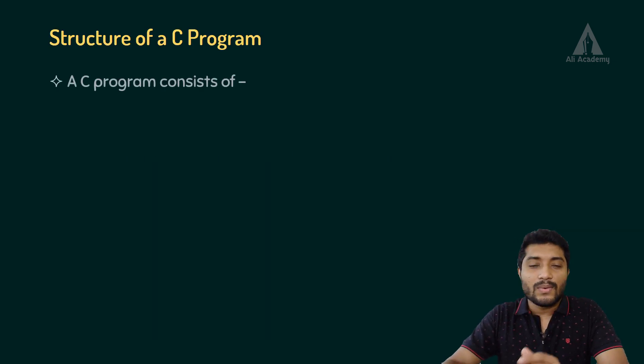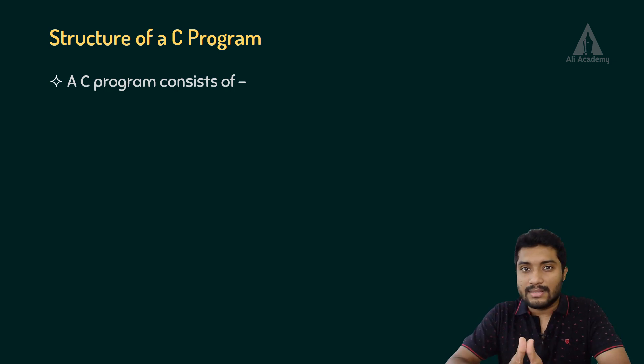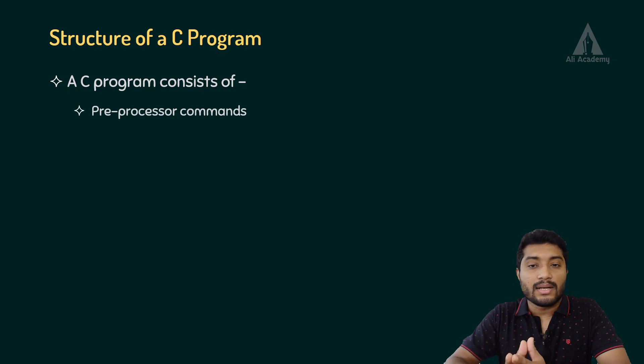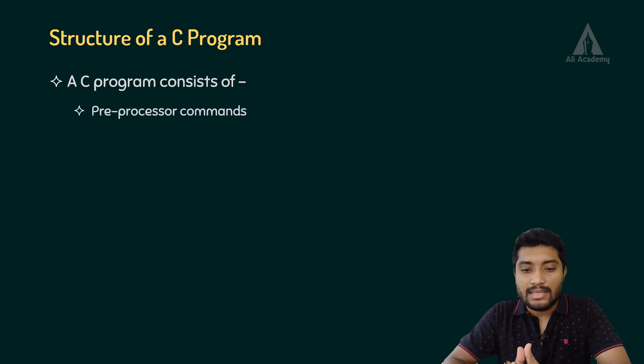So, a C program consists of several things. It consists of — first one is the pre-processor commands.